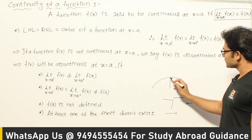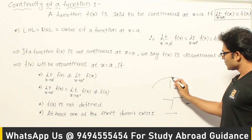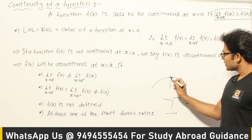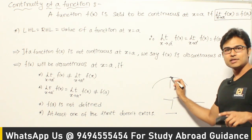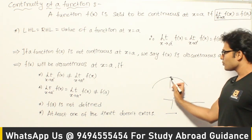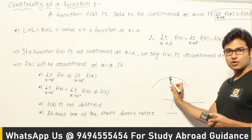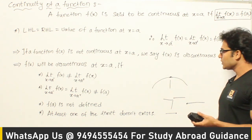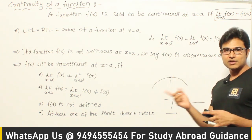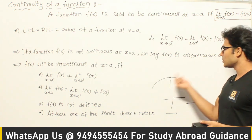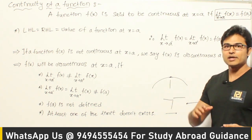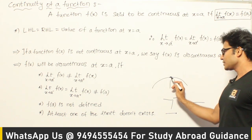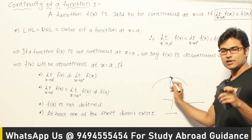So what continuity means is: when you are looking at it at a point, it should have exactly the same value if you look at it from a point to the left of it and from a point to the right of it. If it is not so, then there is some irregularity, which means it is not smooth. If it is smooth, then generally both sides at that point are going to have the same values.